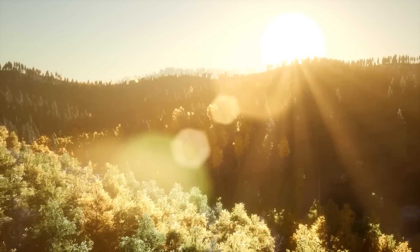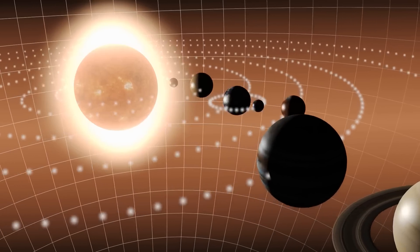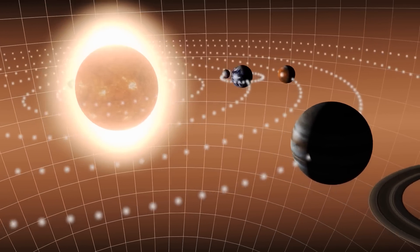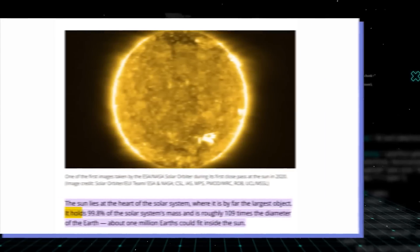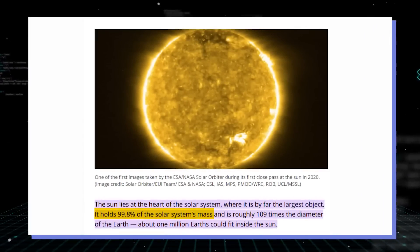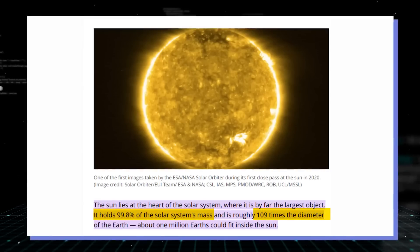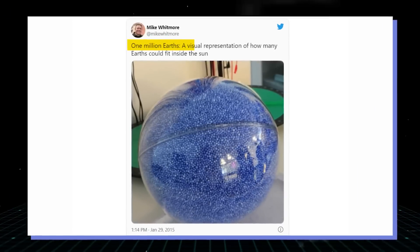The sun is a source of life. Lying at the heart of the solar system, it is by far the largest object. It accounts for 99.8% of the solar system's mass. With a diameter that is roughly 109 times the diameter of the Earth, the sun can contain about 1 million of our planets.